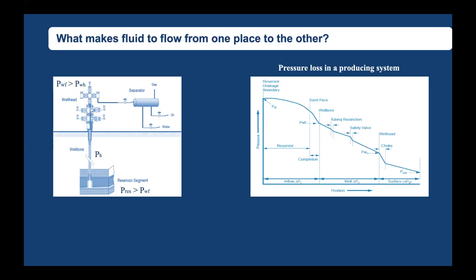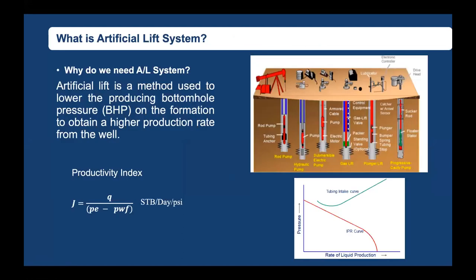When that criterion is not met, the natural flow ends and the well eventually dies. This means the flowing bottomhole pressure drops below the total pressure losses in the well, or the pressure losses become greater than the bottomhole pressure needed to unload fluids to the surface. I've put one plot here which gives you the pressure losses and their location, starting from the reservoir to your separator.